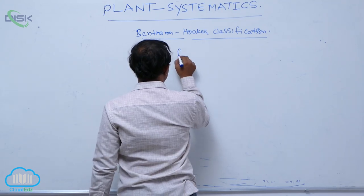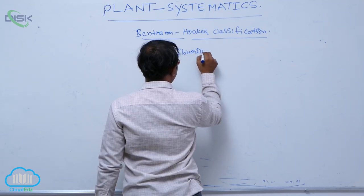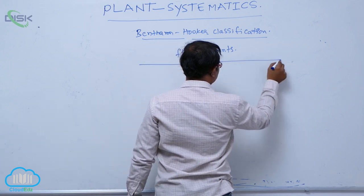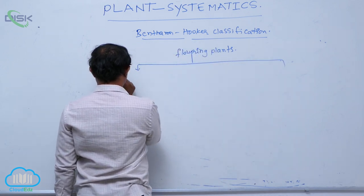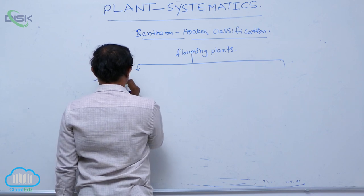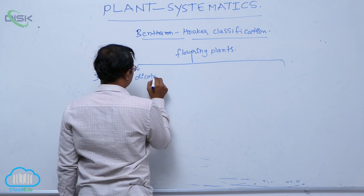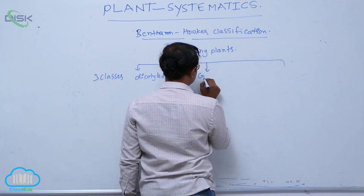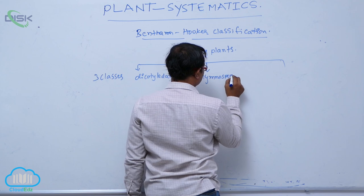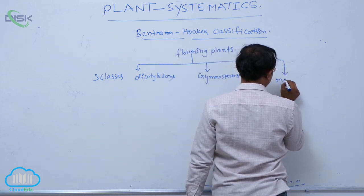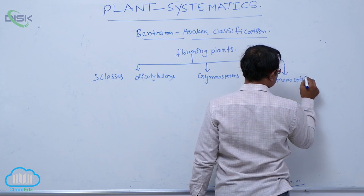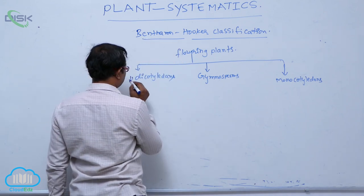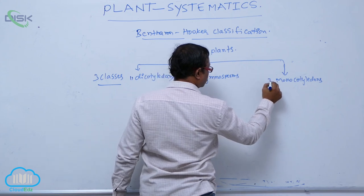Classification of flowering plants: they are divided into three classes. The first one is Dicotyledons, the second one is Gymnosperms, and the third one is Monocotyledons. So, there are the three classes.